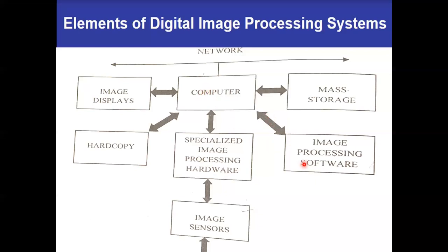The next is image processing software. This software has specialized modules which perform specific tasks. Some software packages have the facility for the user to write code using these specialized modules. A simple example is MATLAB, which has a separate toolbox called the image processing toolbox — a specialized module that helps us to write codes for all image processing applications.